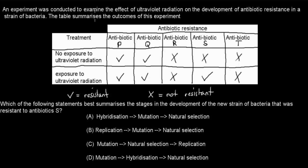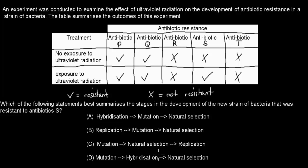Next question. An experiment was conducted to examine the effect of ultraviolet radiation on the development of antibiotic resistance in a strain of bacteria. The table summarizes the outcomes — a tick means resistant and a cross means not resistant. Which of the following statements best summarizes the stages in the development of the new strain resistant to antibiotic S? A. Hybridization, mutation, natural selection. B. Replication, mutation, natural selection. C. Mutation, natural selection, and replication. D. Mutation, hybridization, and natural selection. Pause the video and attempt the question.